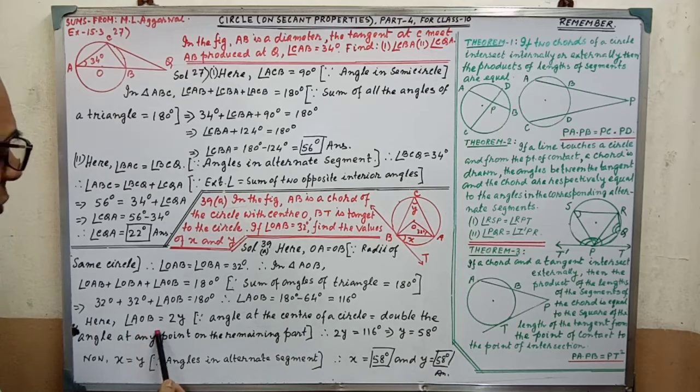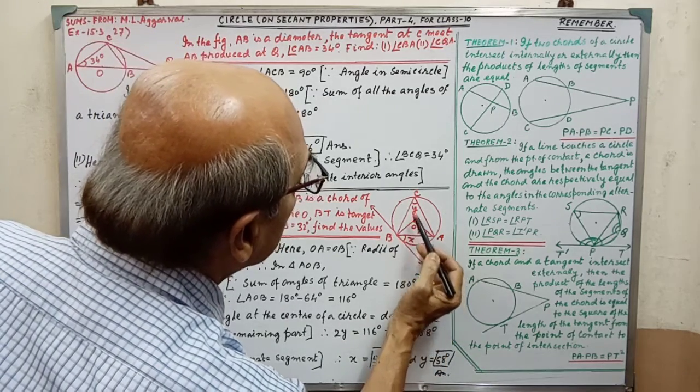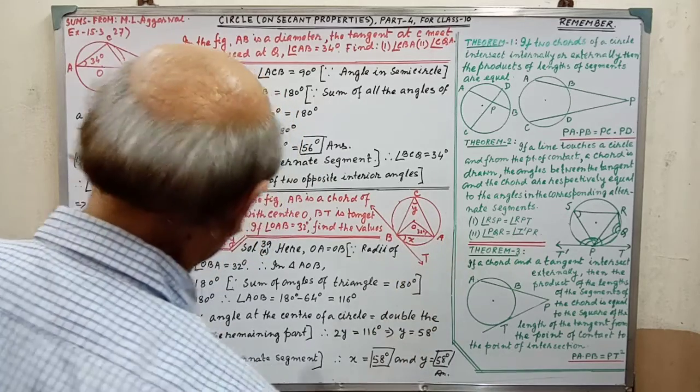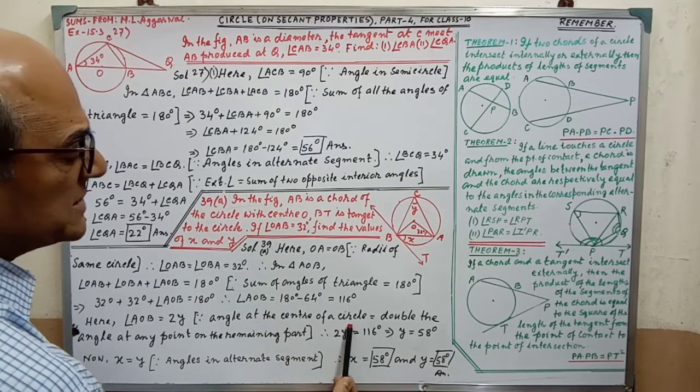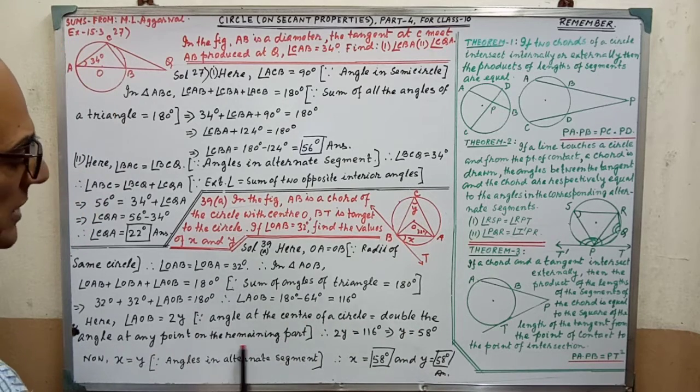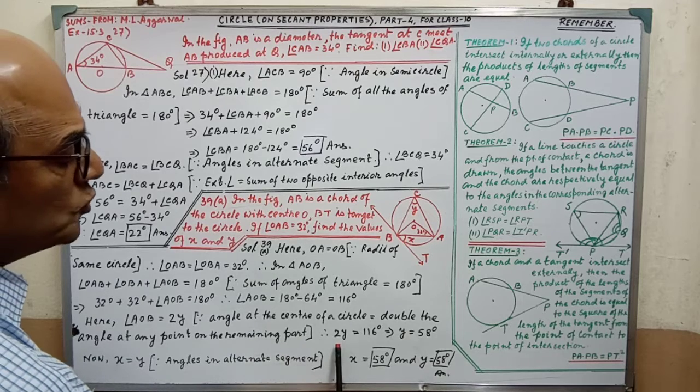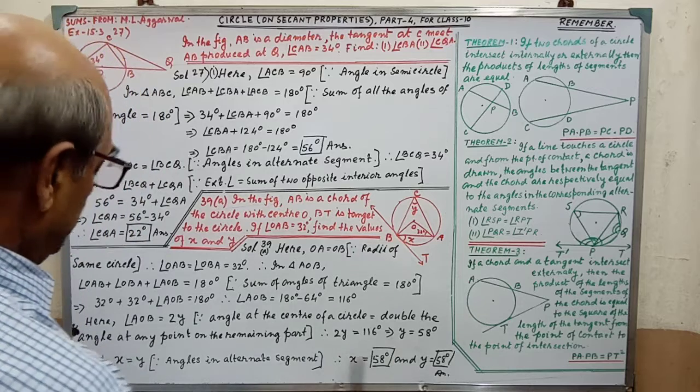Here, angle AOB equal to 2Y. Angle at center, angle at circumference. Since angle at center of a circle equal to double the angle at any point on the remaining part. Therefore, 2Y equal to 116, Y equal to 58.